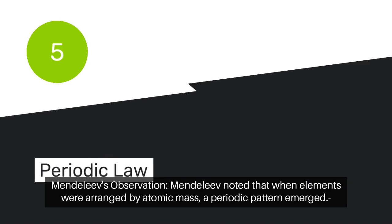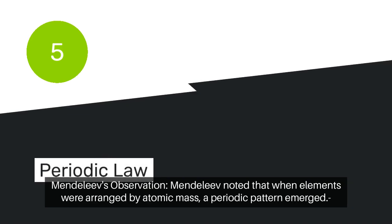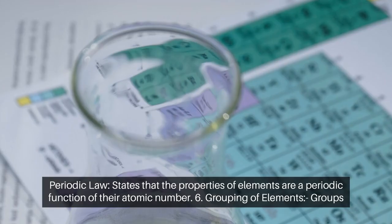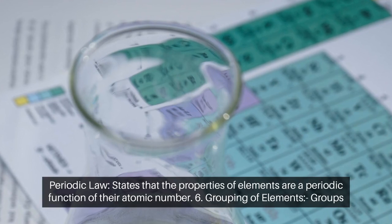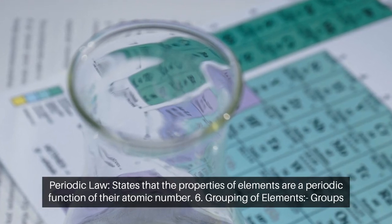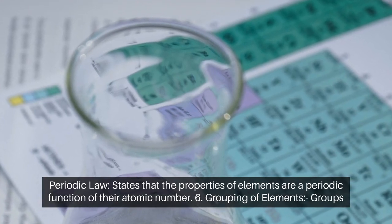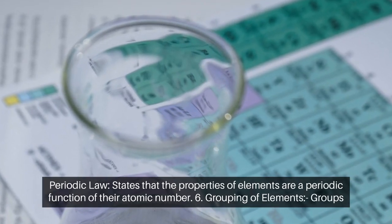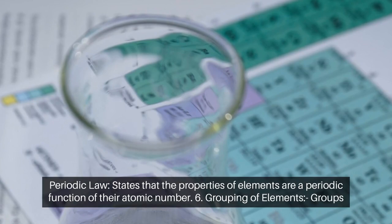Periodic Law. Mendeleev's Observation: Mendeleev noted that when elements were arranged by atomic mass, a periodic pattern emerged. Periodic Law states that the properties of elements are a periodic function of their atomic number.